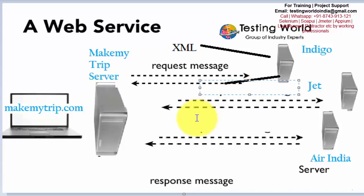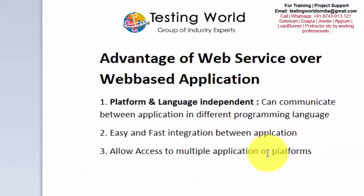Here, more than two applications are communicating together — MakeMyTrip with Indigo, with Jet, with Air India. Multiple applications are communicating together very fast and in a very easy manner, just by passing and receiving data through the common XML mechanism. There is no need for direct integration, so ultimately two applications are working together without direct integration, making this type of integration very fast and easy to develop.